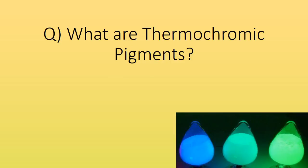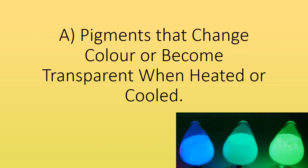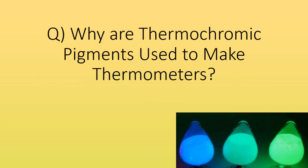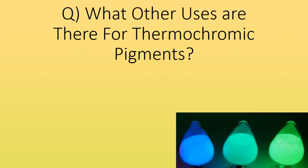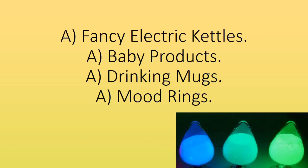What are thermochromic pigments? Pigments that change colour or become transparent when heated or cooled. Why are thermochromic pigments used to make thermometers? Different pigments change colour at different temperatures; therefore a mixture of them can be used to make a colour-coded temperature scale. What other uses are there for thermochromic pigments? Fancy electric kettles, baby products, drinking mugs and mood rings.